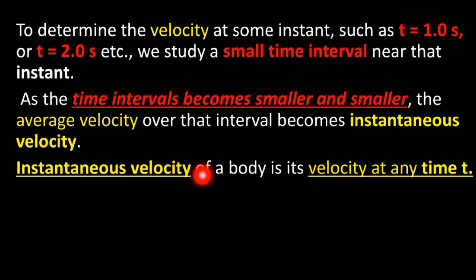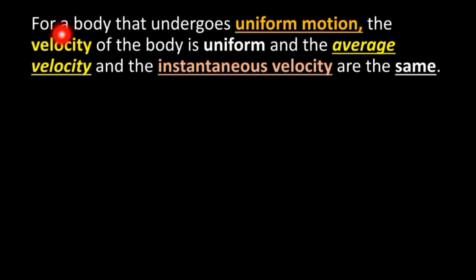Instantaneous velocity of a body is the velocity at any time t. For a body that undergoes uniform motion, the velocity of the body is uniform and the average velocity and the instantaneous velocity are the same.